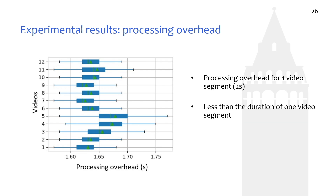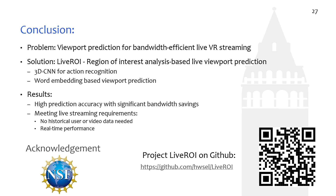Finally, we checked the processing overhead for viewport prediction per video segment. The maximum value is below 1.8 seconds. For a two-second video segment, we will not accumulate the processing delay and thus meet the real-time requirement. To summarize, targeting viewport prediction for a live VR video streaming system, we leverage 3D-CNN to analyze actions inside the video. We then use word embedding to compare the video content to the user preference to detect the region of interest for viewport prediction. The result shows high prediction accuracy with significant bandwidth savings, while meeting the real-time requirement for live streaming.